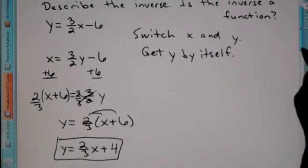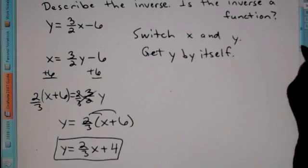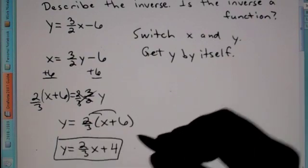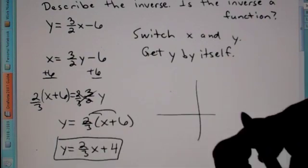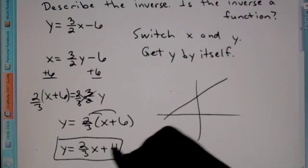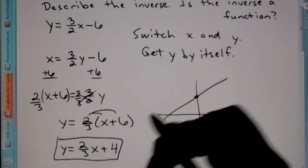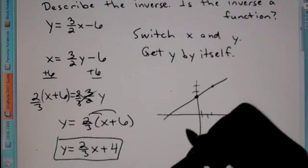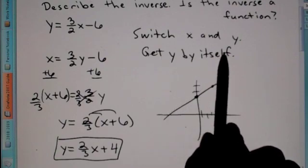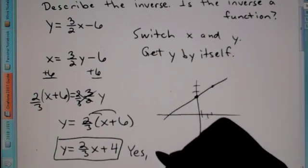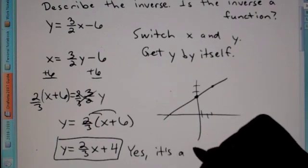It also asks: is the inverse a function? What makes something a function is if it passes the vertical line test. If you were to graph this as an equation of a line, your intercept is 4 and your slope is up 2 over 3, so the vertical line test would pass here. Yes, this is a function.